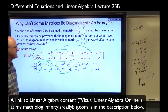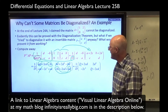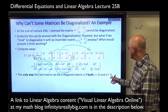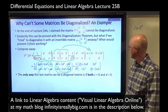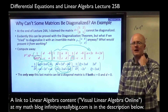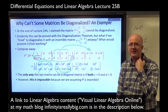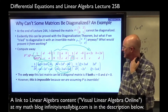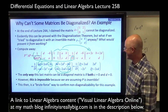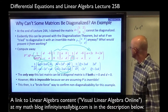The only way the last matrix can be diagonal is if both C equals 0 and D equals 0, to make both off-diagonal entries zero. But if C and D are both zero, then P has a row of zeros, giving a determinant of zero — it wouldn't be invertible. Its determinant would be zero, meaning we'd be dividing by zero. That's what's stopping it. This is a brute force way to confirm non-diagonalizability for this example.